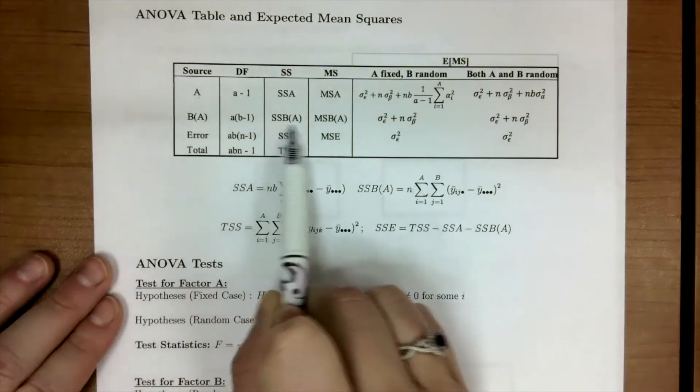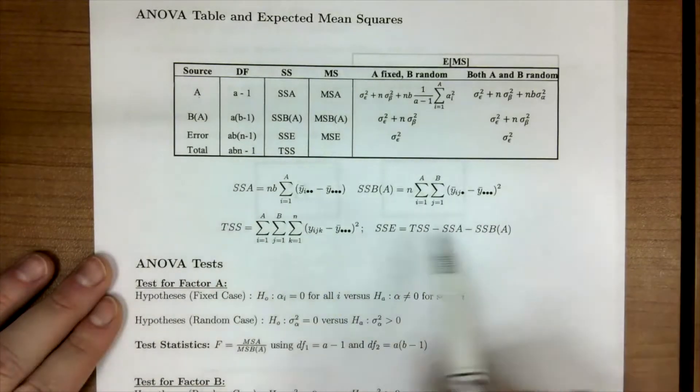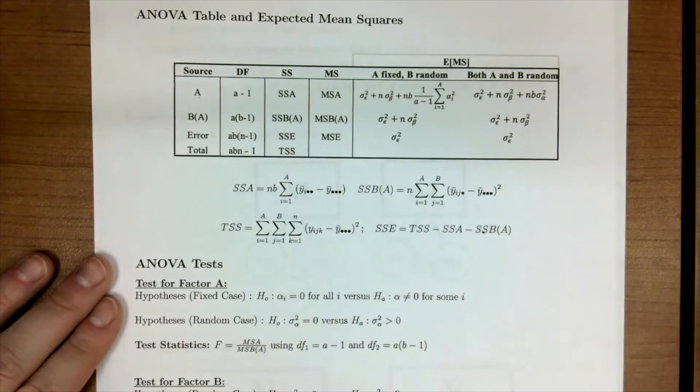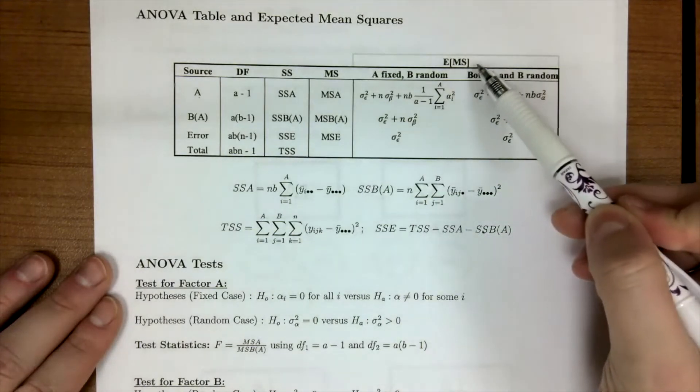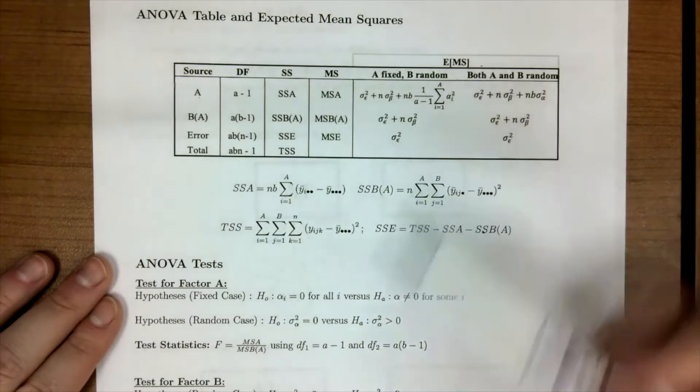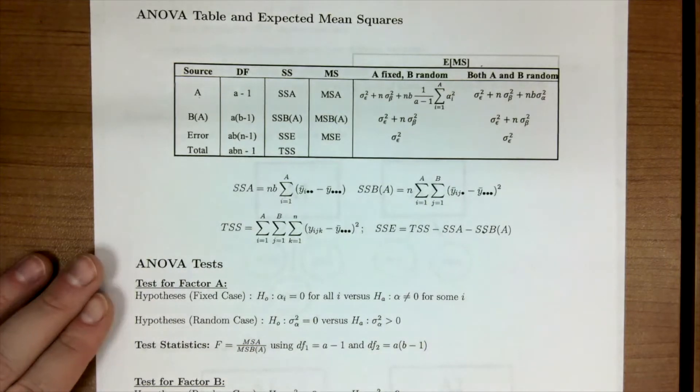And that's the same notation right here. I have your sums of squares and your total sums of squares here if you'd like it, but really what we want to focus on is looking at the expected mean squares. This is going to help us understand what the denominator will be for our ANOVA tests.